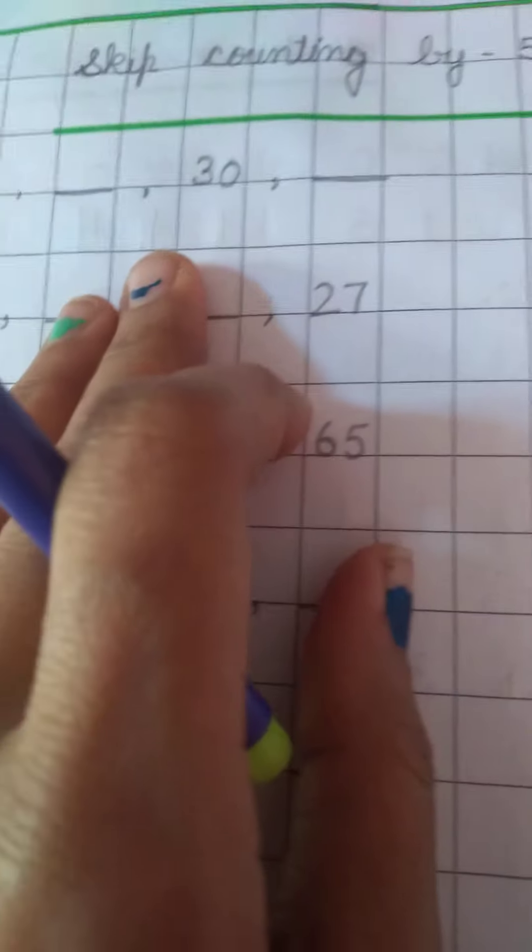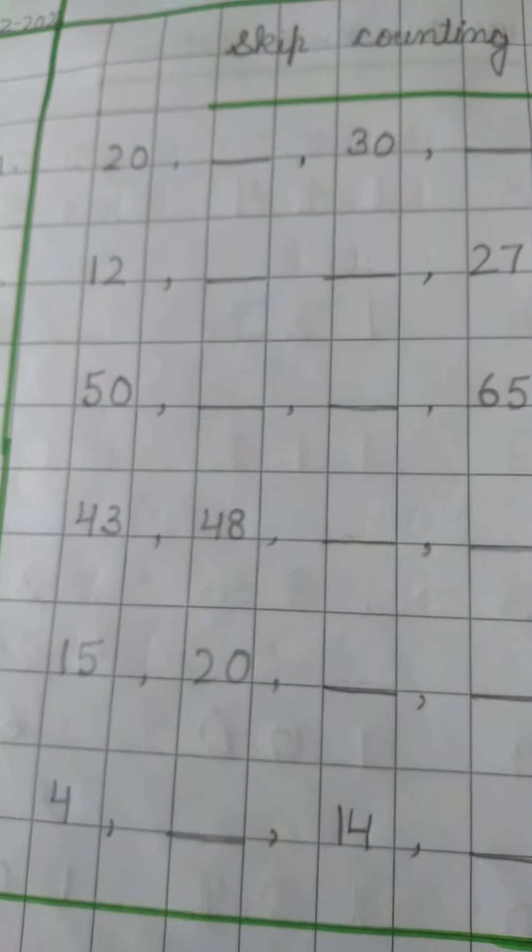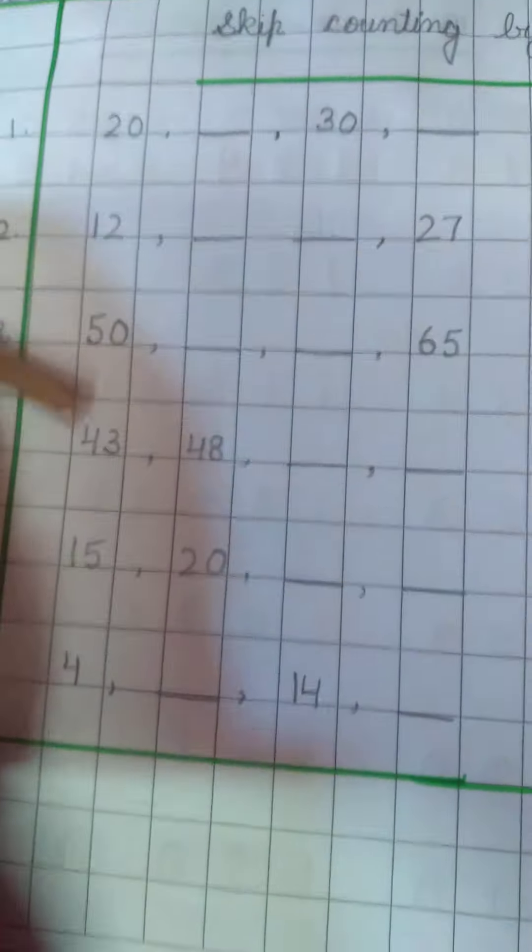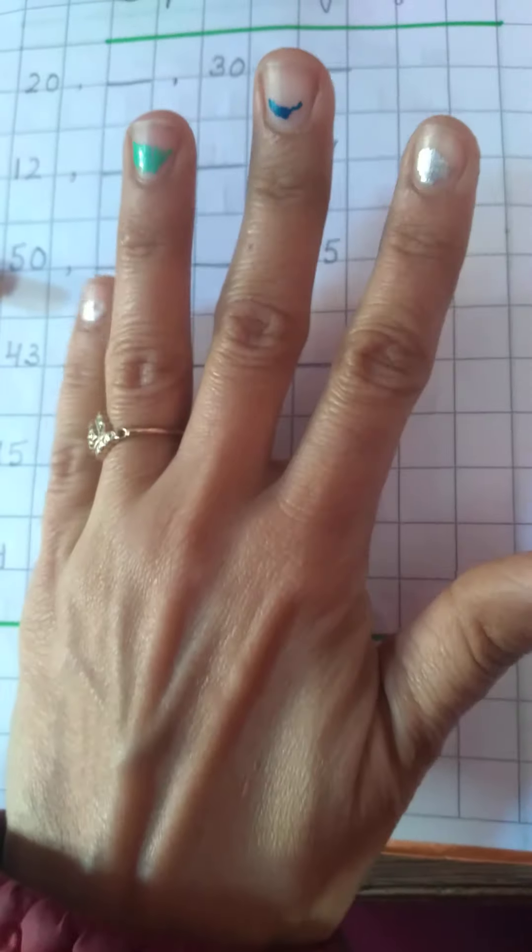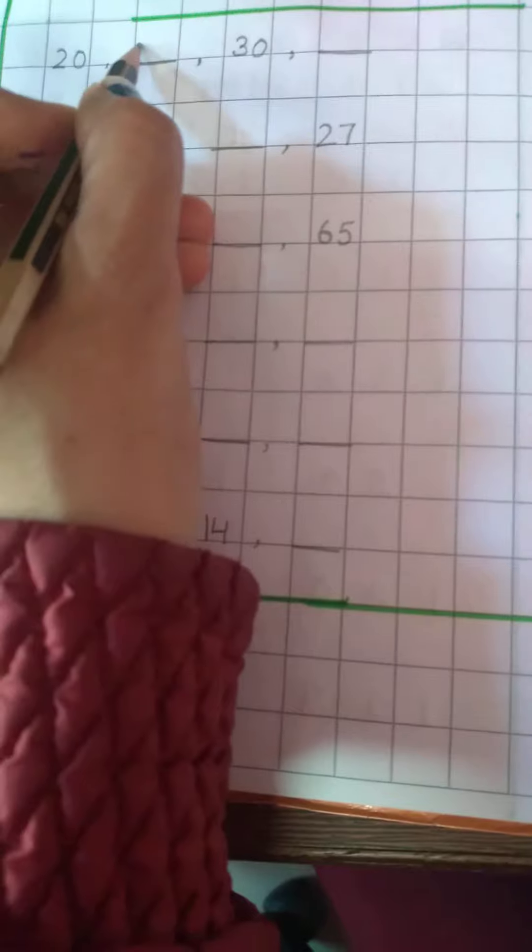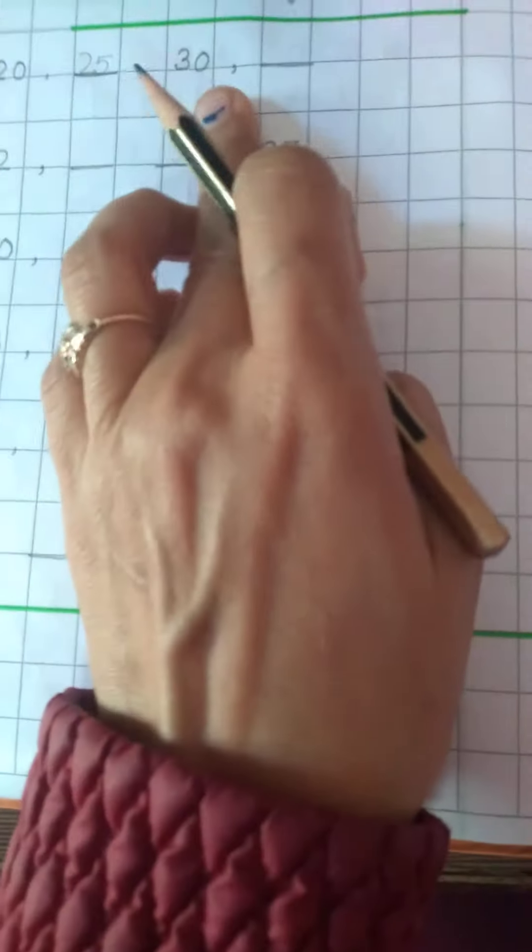Notebook exercise. Now see here. Here number is 20. After 20. First number is 21, 22, 23, 24, 25. 25 is the fifth number. 25.